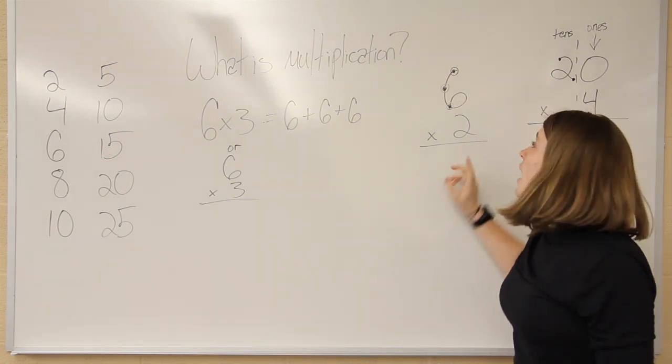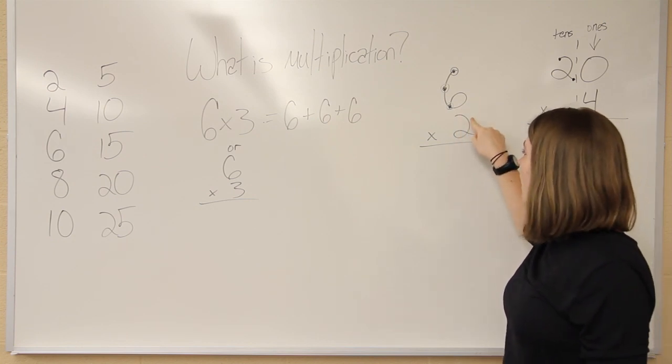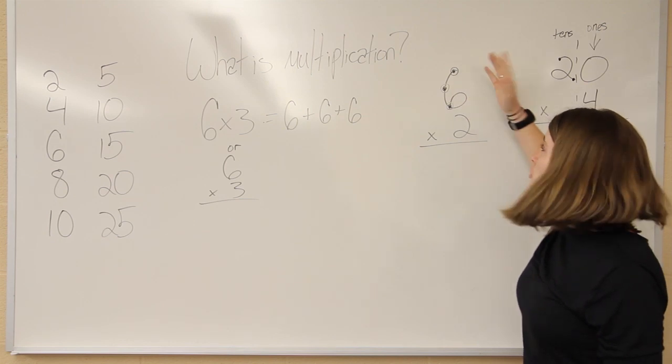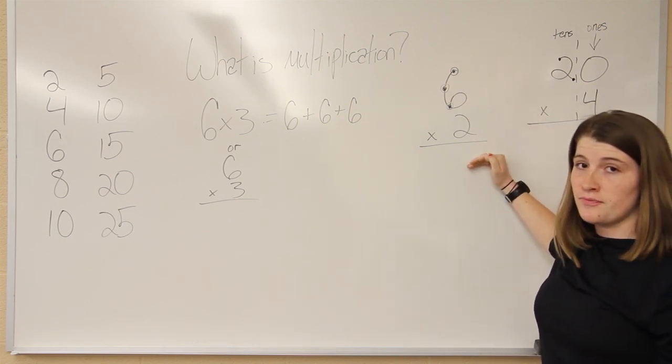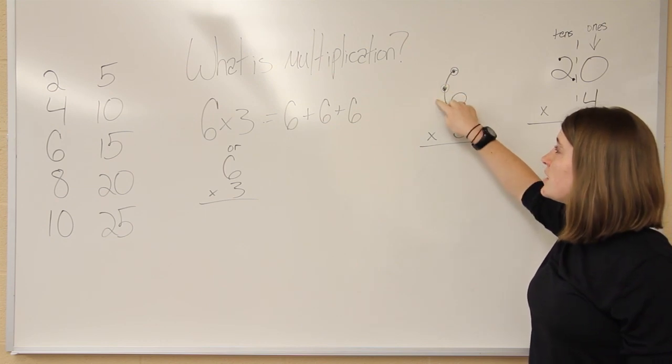What they'll do is they'll take the bottom number and they'll skip count by that number on the top number. For example, six times two: on the six there are three double touch points.